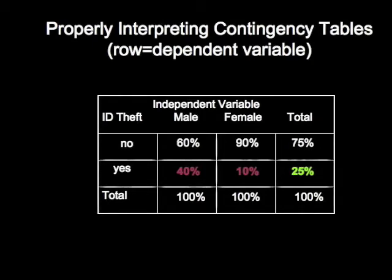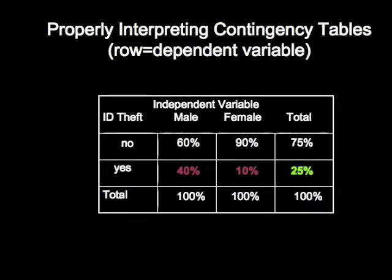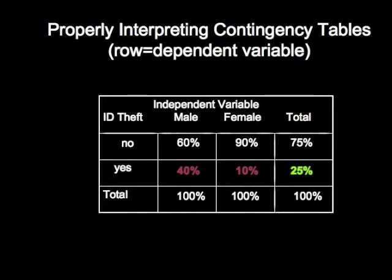When doing a contingency table analysis on a dependent variable or an independent variable, there are two things to consider. First of all, you need to interpret the marginal frequencies or marginal percent distributions for the dependent variable. In this particular example, 25% of the sample had an experience with an identity theft.